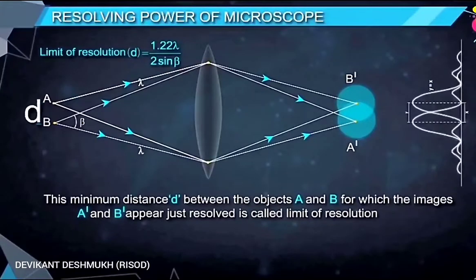This minimum distance small d between objects A and B for which the images A' and B' appear just resolved is called the limit of resolution.